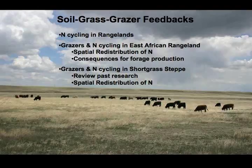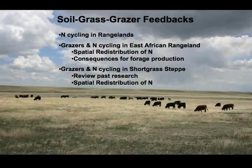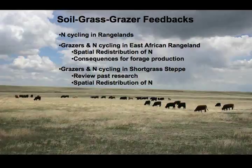There's nothing special about nitrogen cycling in either of these two locations — I'm presenting these because they're the only two rangeland ecosystems I've worked in with sufficient data to quantify the role that grazers can play in the nitrogen cycle. For the East African rangeland, that's work from my dissertation, looking at spatial redistribution of nitrogen by cattle and native ungulates and consequences for forage production. The second half reviews past work in short grass steppe on cattle management and nitrogen, with updated perspectives on spatial redistribution.